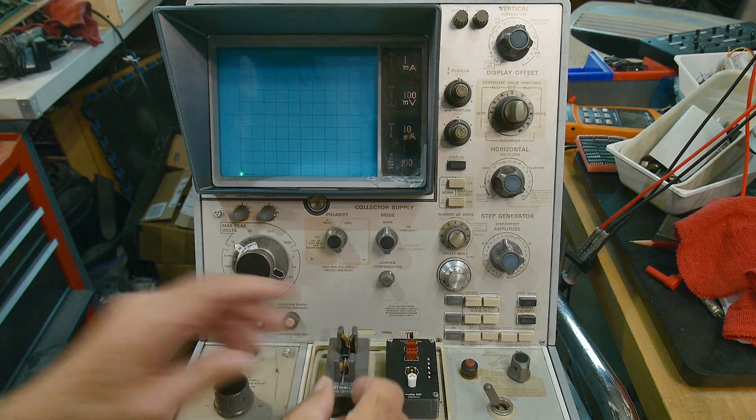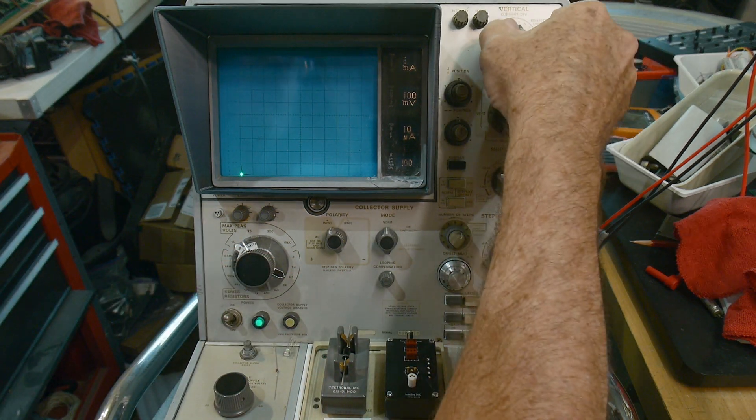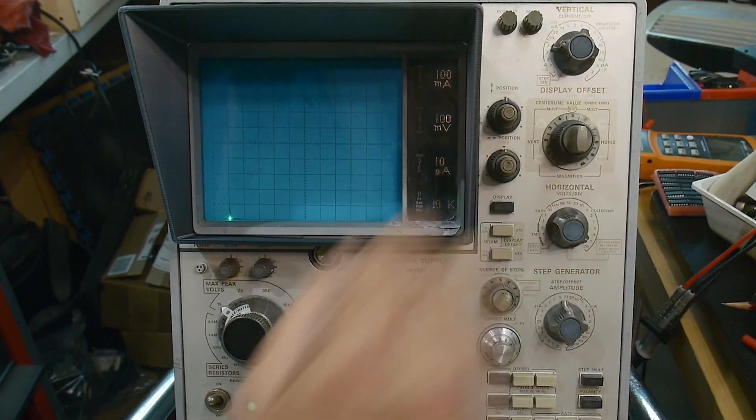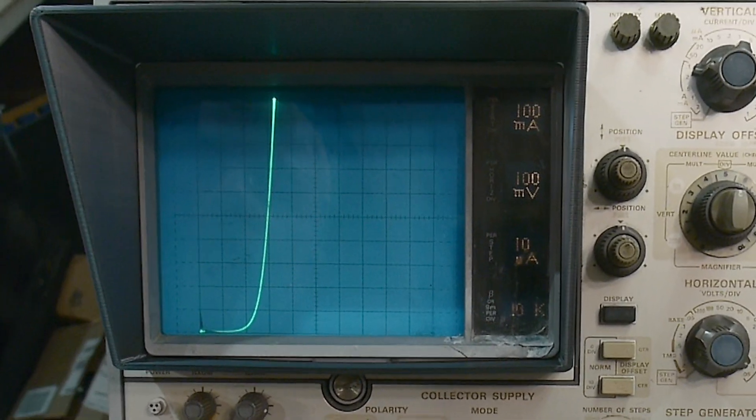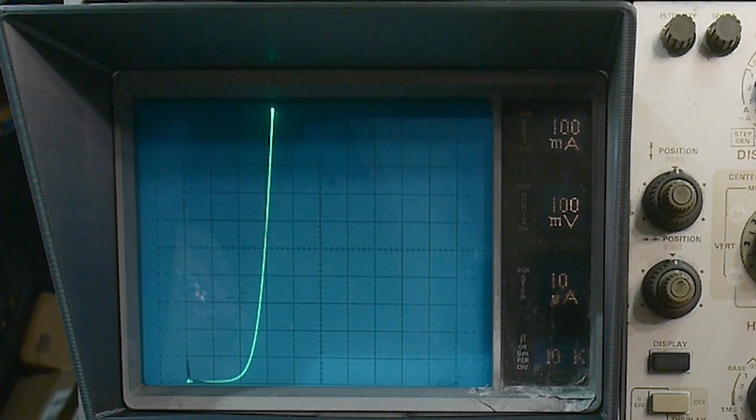Let's come back to our tester. I'll put it in the test fixture and we'll run it up to 1 amp like we did before. Here's 1 amp, it's 0.33 volts.